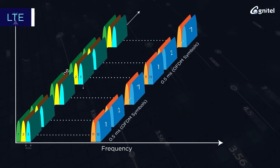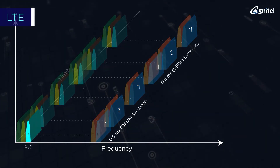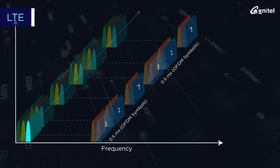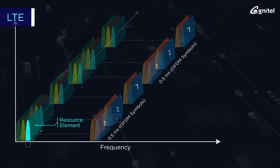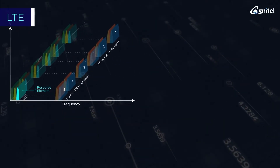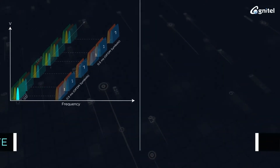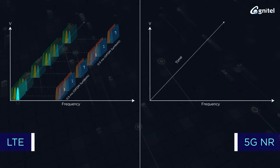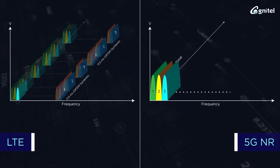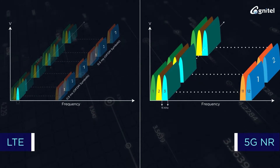The LTE slot had either 7 or 6 OFDM symbols, and the resource block had a fixed matrix structure with a resource element represented by one symbol in a subcarrier. In contrast, the 5G NR resource block (NRB) contains 12 subcarriers but supports multiple subcarrier spacings.